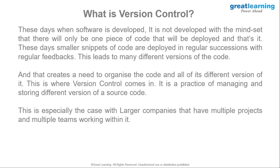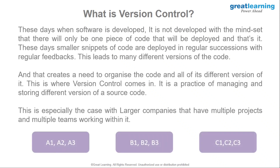This is especially the case with larger companies that have multiple projects and multiple teams working on them. For example, a shopping website might have Project A, Project B, and Project C, each handled by a different team. Project A is for the payment feature, Project B for shopping, and Project C for warehousing — so all these different teams work on different versions and features of the website.